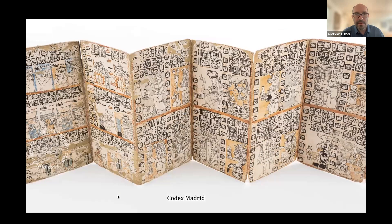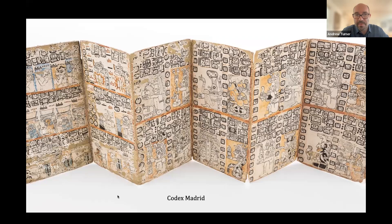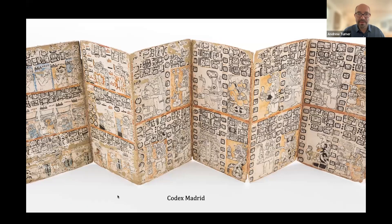These Mesoamerican books were made as screen folds — not bound along one edge like European books. They're made out of long pieces of paper divided into sections and covered with plaster. You could open the whole thing up like a screen or fold it, looking at one or two pages at a time, or unfold it along its entire length. All of them, with the exception of the Codice Maya de Mexico, are painted on both sides. The Codice Maya de Mexico is only decorated on one side.